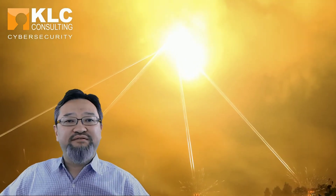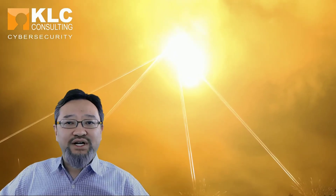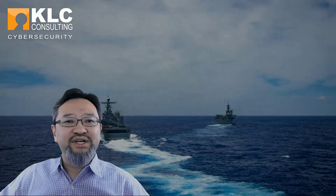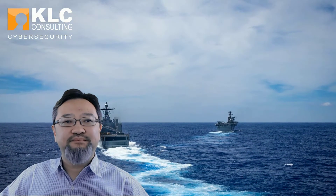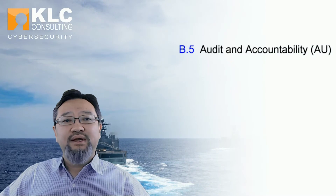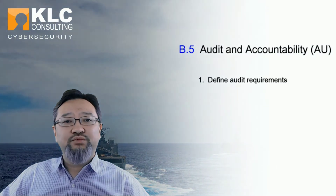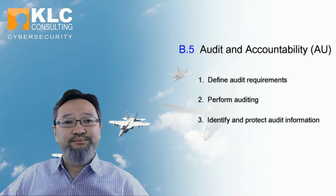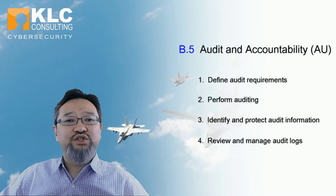Audit and Accountability is defined as a chronological record that reconstructs and examines the sequence of activities surrounding or leading to a specific operation, procedure, or event in a security-relevant transaction from inception to final results, to ensure the actions of an entity may be traced uniquely back to that entity. This domain contains four capabilities: 1. Define audit requirements, 2. Perform auditing, 3. Identify and protect audit information, and 4. Review and manage audit logs.